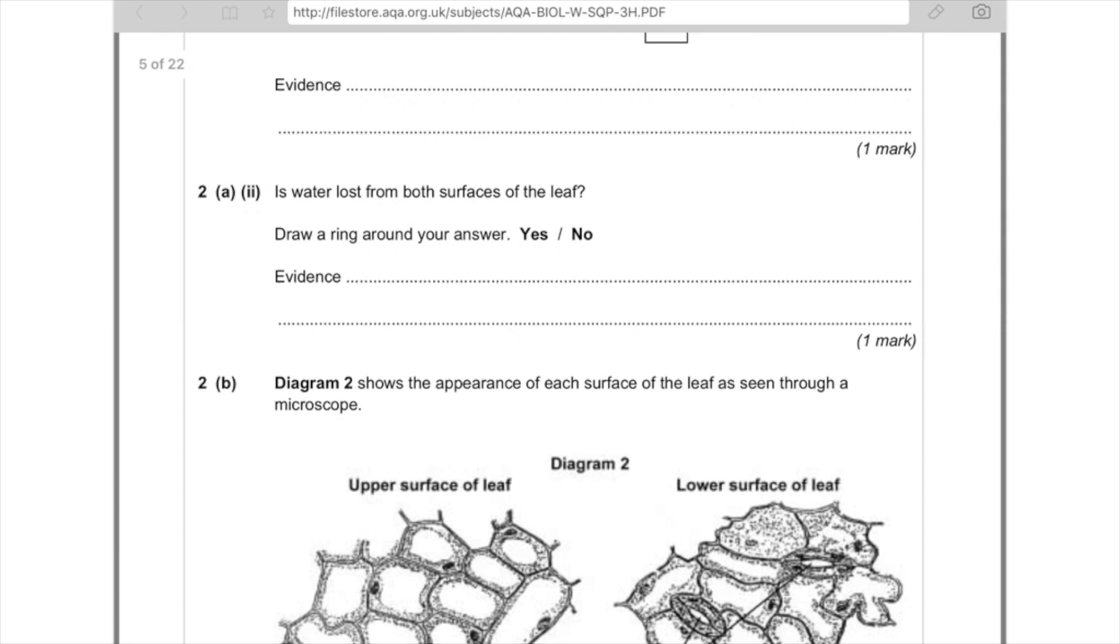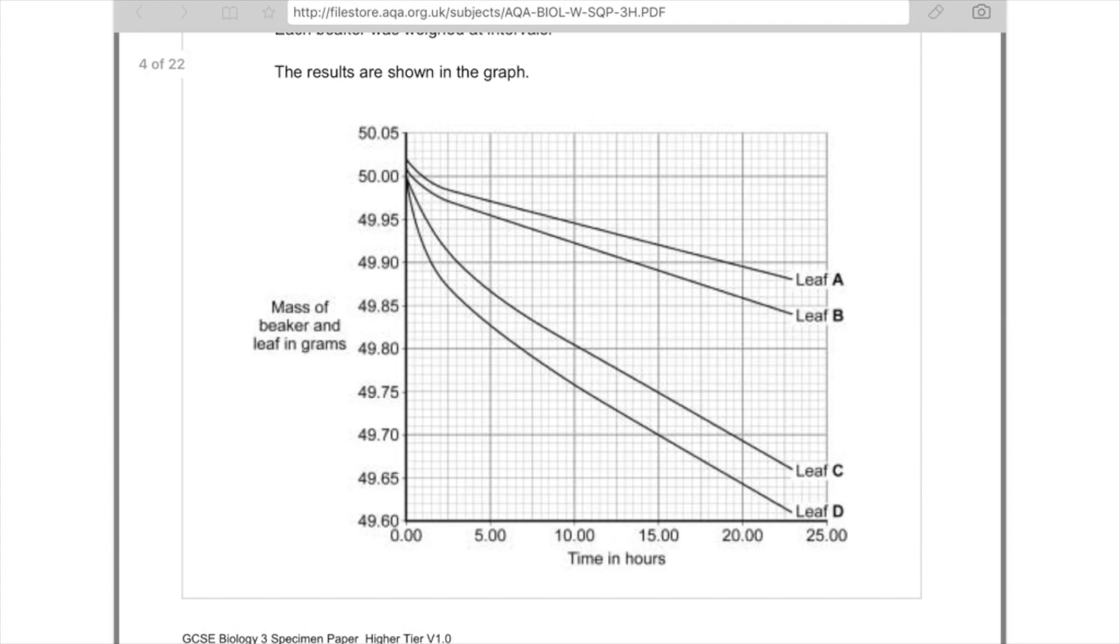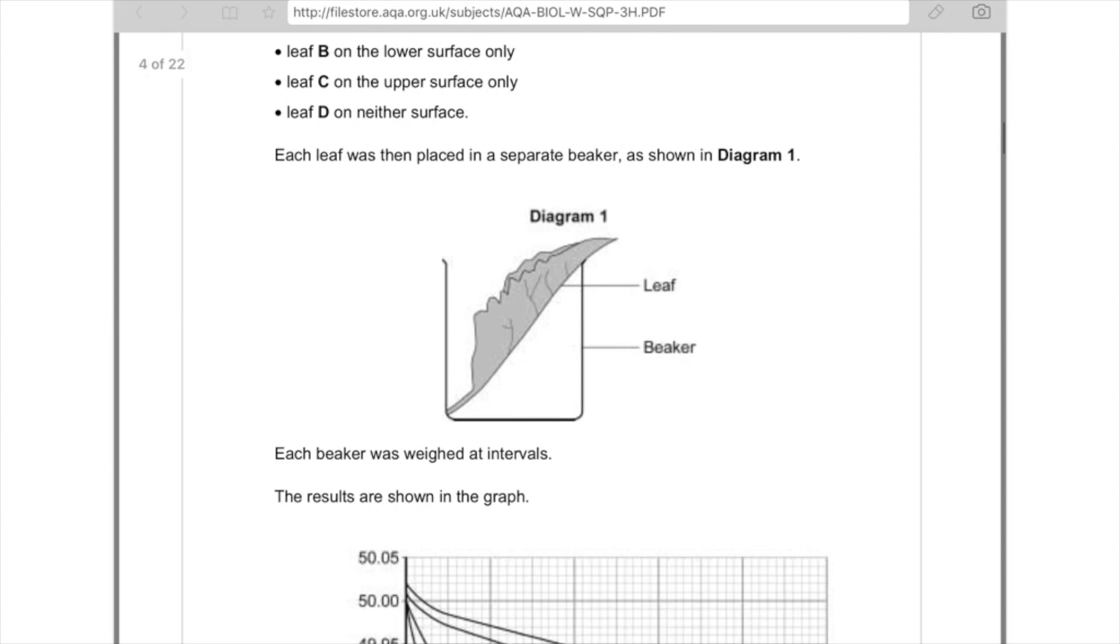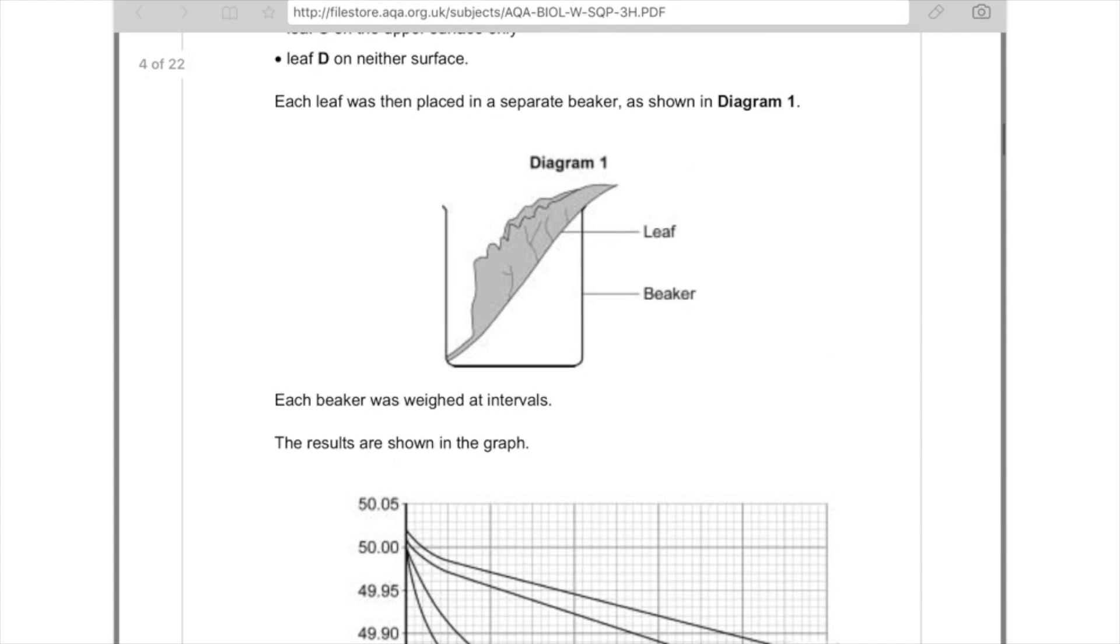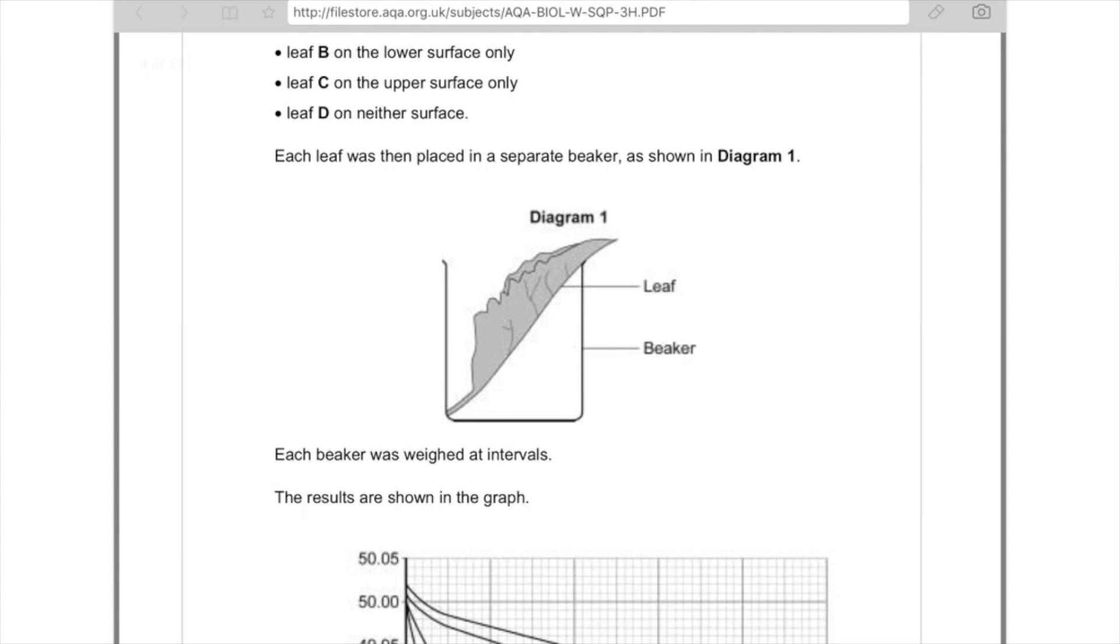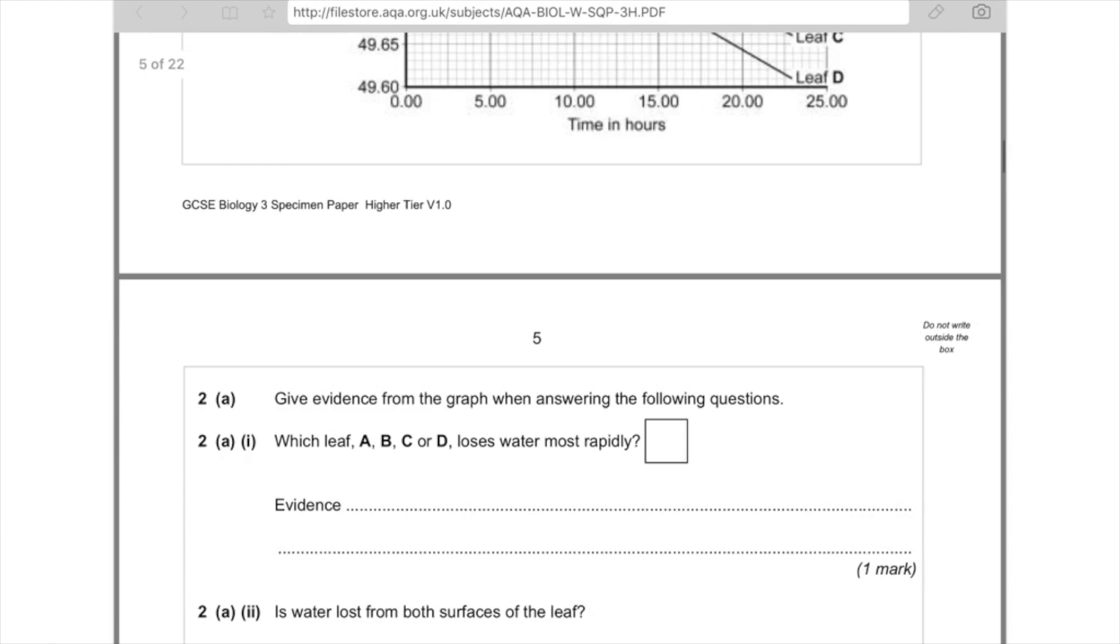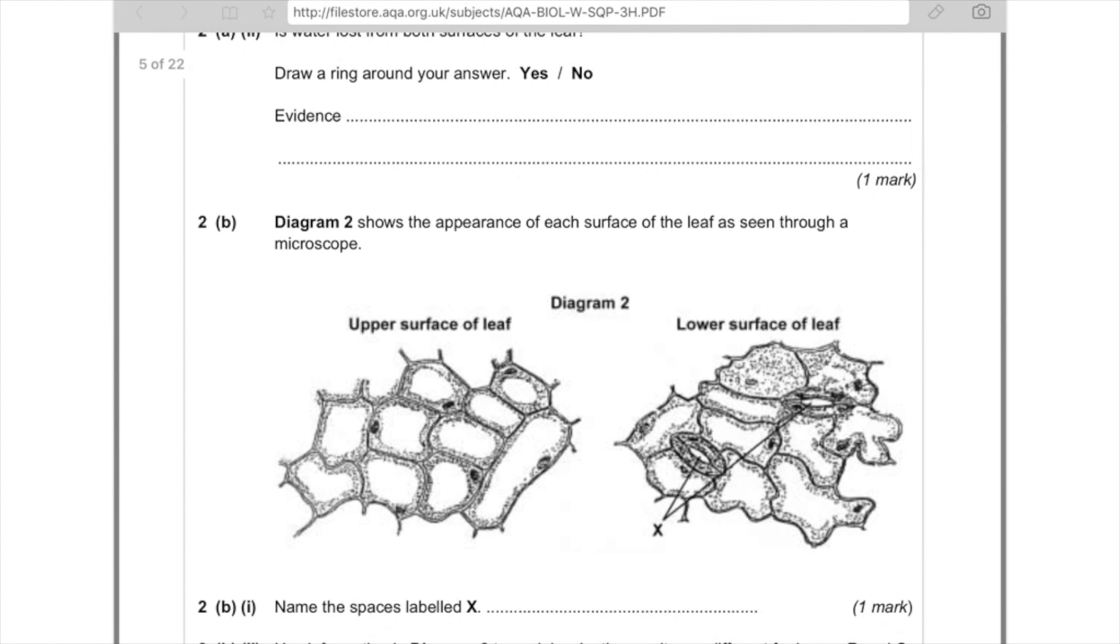Is water lost from both surfaces of the leaf? Draw a ring around your answer, yes or no, and give evidence. This is a bit more tricky because they haven't given you much space to explain yourself. The answer here is yes. The reason being that if you need to look at B and C here, and you can see that with B, the Vaseline was on the lower surface only. However, it still lost water, so we know that water was being lost at the top of the leaf. And then in C, although the top of the leaf was blocked, the bottom of the leaf wasn't blocked and we see a decrease in mass. So, therefore, we know that it's being lost at both the top and the bottom. I'm going to read you out the mark scheme because it's quite hard to actually work out what you need to write. So you're going to say yes, and you're going to say because both leaves B and C both lost mass. So, actually, I probably said way too much then, as per usual.